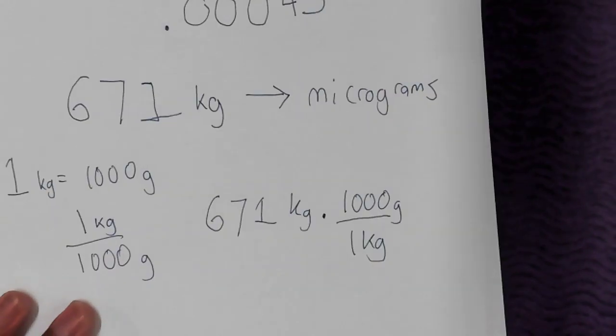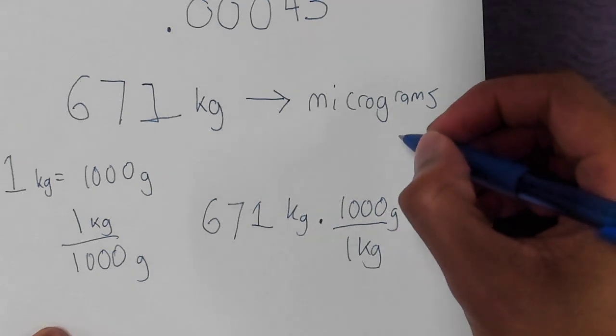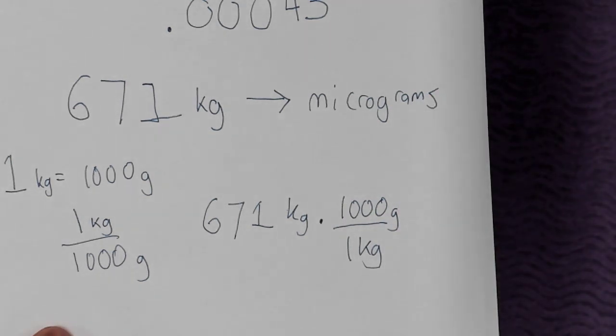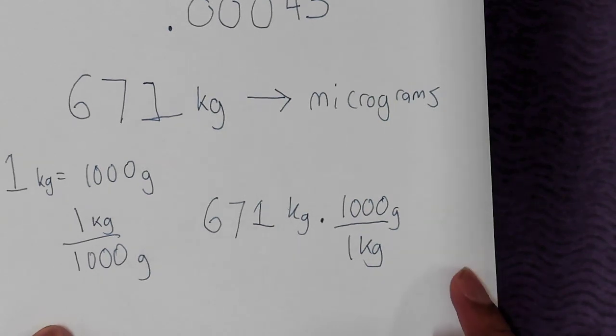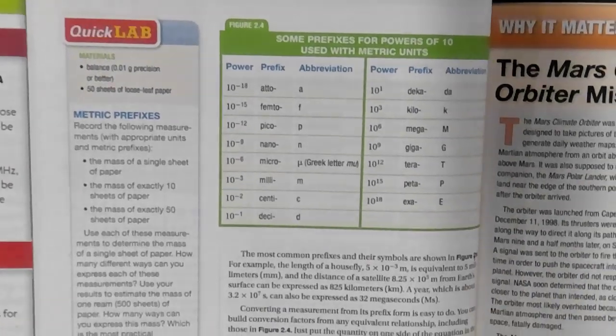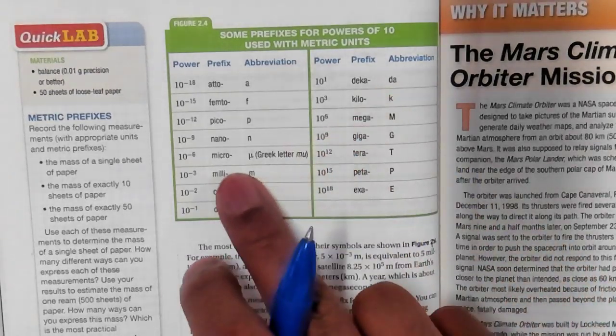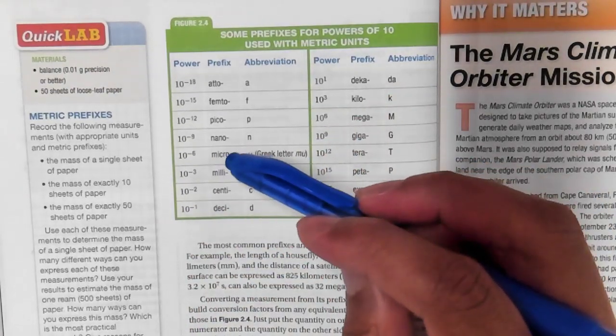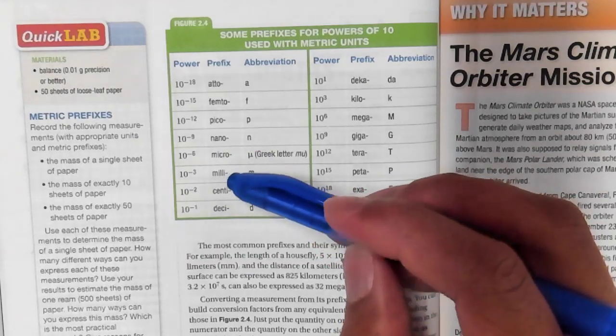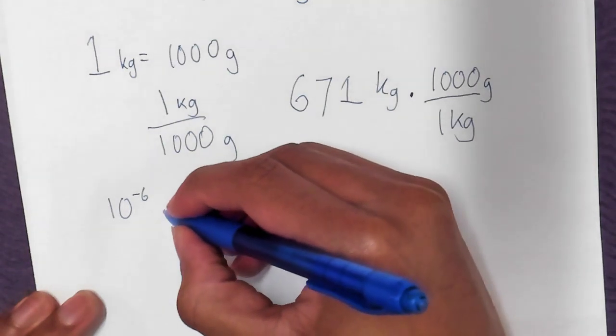We write it as a fraction. 671 kilograms times, I'll flip it because I want kilograms at the bottom. Kilograms, a thousand grams. Now these are ready to cancel, but we're not done yet. Our problem asks for micrograms, not grams. We actually have to do another step here. If we just cancel these out, we will get grams. We need micrograms.